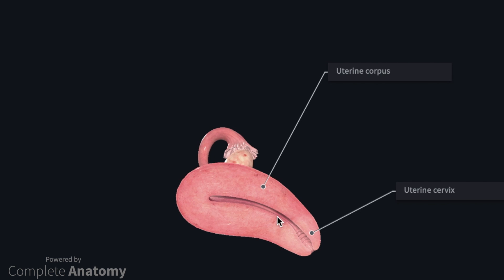The cervix has two openings: a proximal opening referred to as the internal cervical os, and a distal opening which is the external cervical os, which allows for communication between the uterine cavity, the cervical canal, and the vagina. The uterus is described as having three layers: an inner endometrium, which lines the uterine cavity — a highly vascular glandular layer subject to great change throughout the menstrual cycle. The myometrium is the middle layer, primarily muscular tissue with a small proportion of fibrous tissue. The outer layer is named the perimetrium, which is formed by the overlying peritoneum.